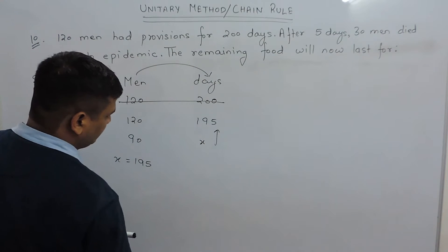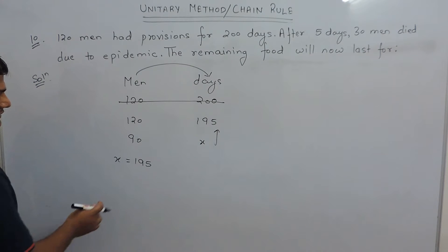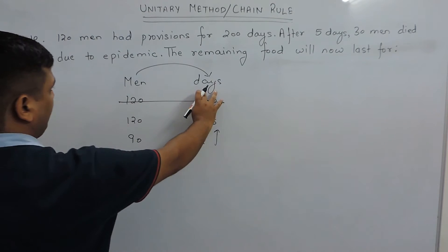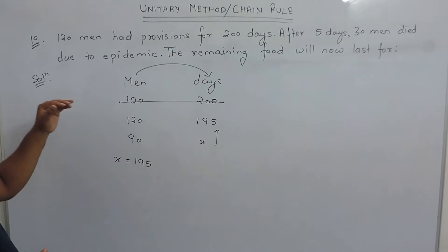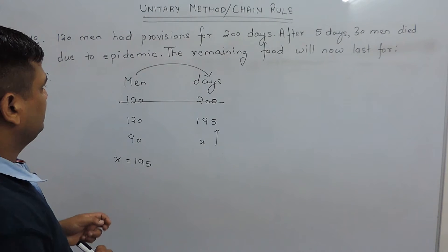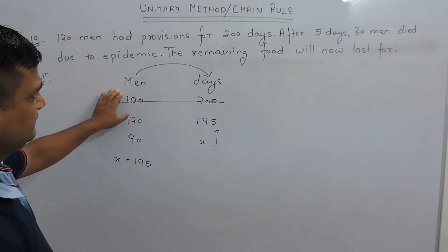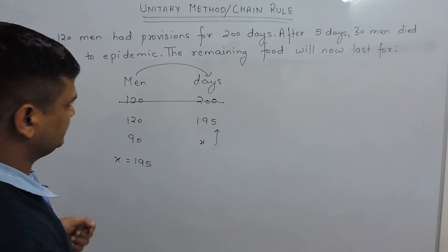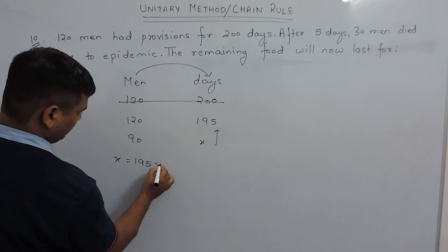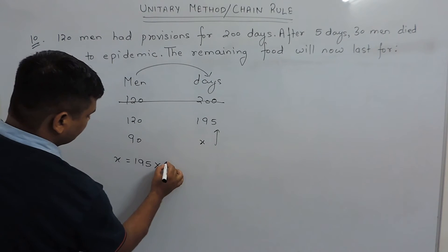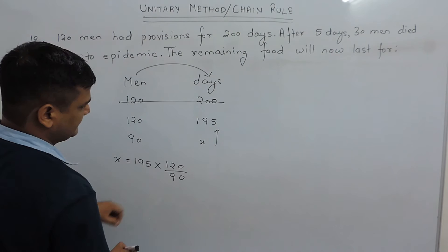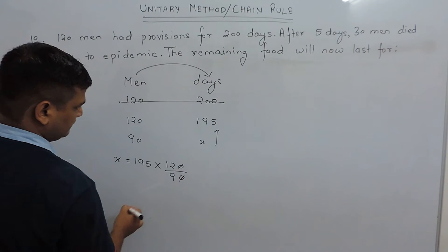The value above our variable must be written on the right-hand side of the equals sign. If we find the relation between men and days: if we have less men, then their food runs for more days. Therefore, the relation is indirect. So we write the indirect sign here, and 120 by 90 should be written here.